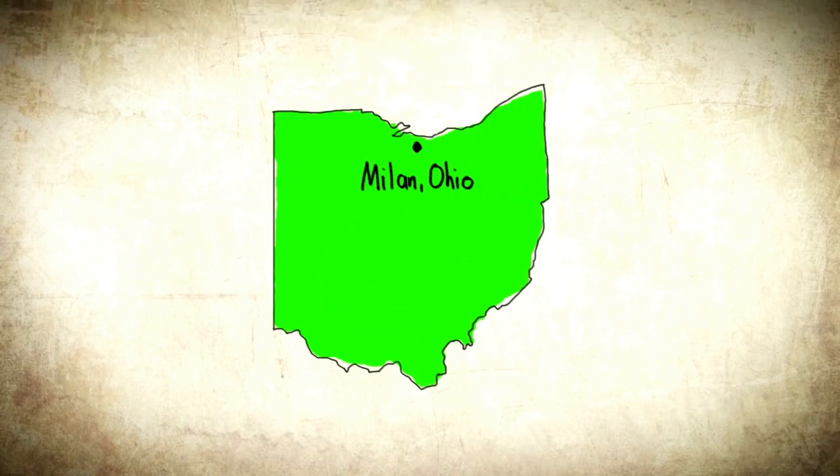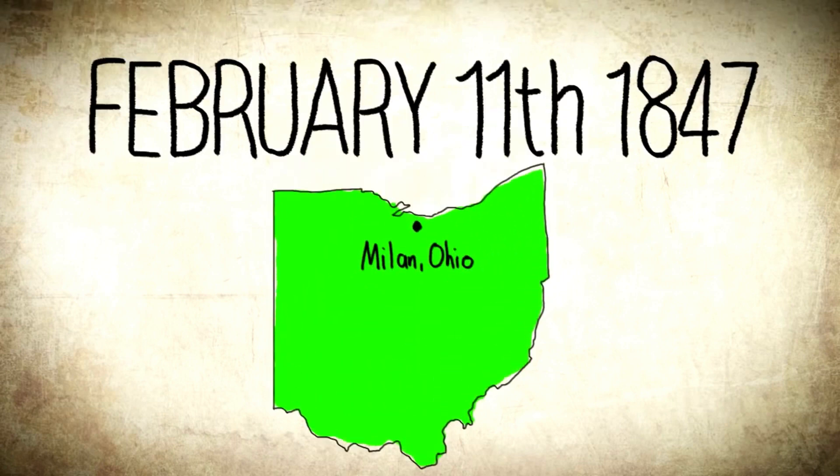Thomas Edison was born in Milan, Ohio on February 11, 1847. He didn't learn to talk until he was almost four years old.